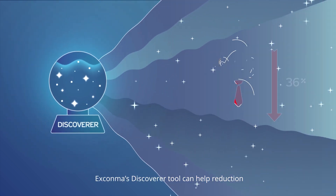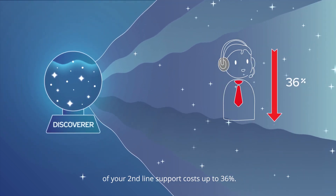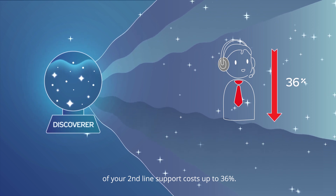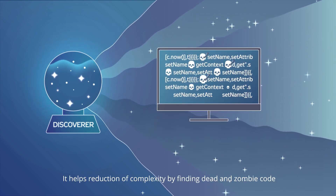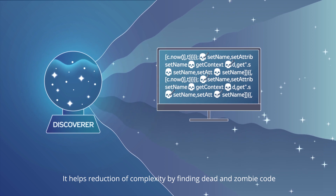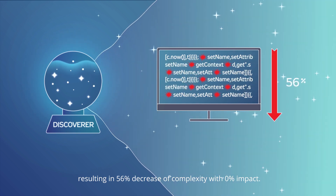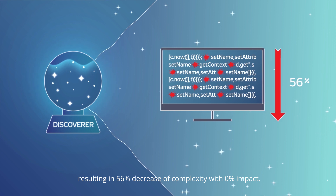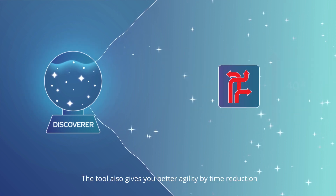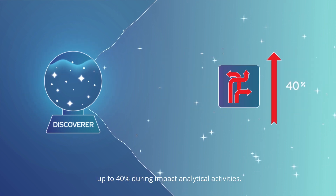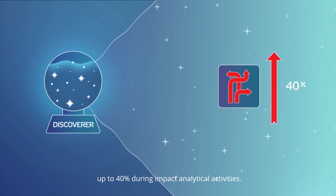The Discoverer tool can help with reduction of your second-line support costs up to 36%. It helps reduction of complexity by finding dead and zombie code, resulting in a 56% decrease of complexity with 0% impact. The tool also gives you better agility by time reduction up to 40% during impact analysis activities.